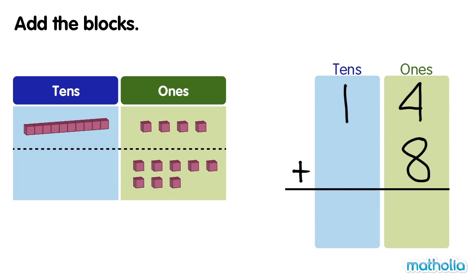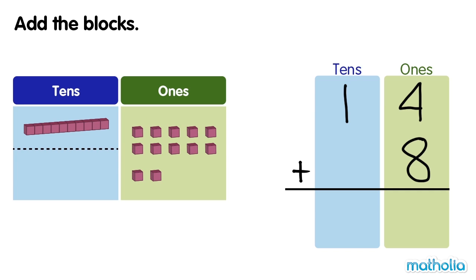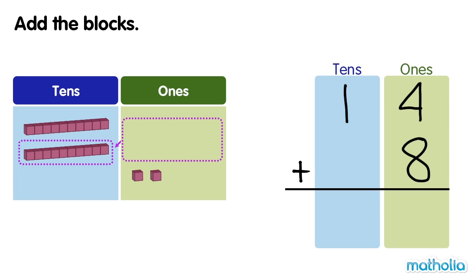First, let's add the 1s. 4 ones plus 8 ones equals 12 ones. We can regroup the 12 ones into 1 ten and 2 ones. We write 2 ones in the ones column and 1 ten in the tens column.